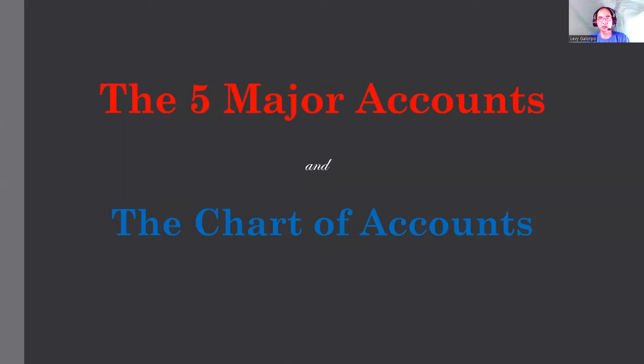Good morning class. This is week four of our lesson for Accounting 1. Last week we discussed the accounting equation and some illustrations or situations with regard to its application. The accounting equation — Assets equals Liabilities plus Equity — was reviewed with examples of business transactions to apply the accounting equation. Today we will discuss further about the five major accounts and the chart of accounts.